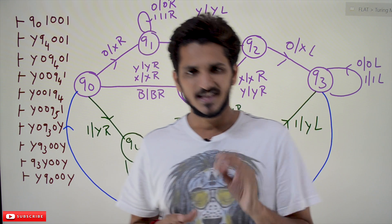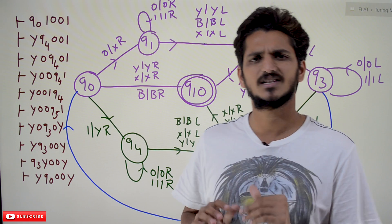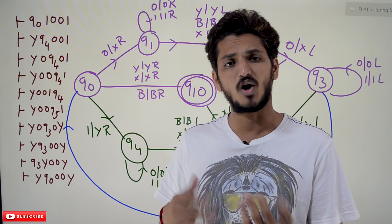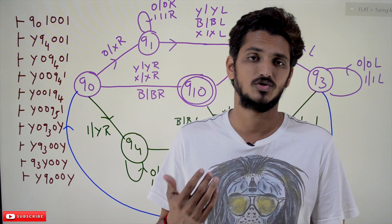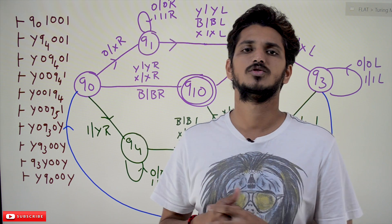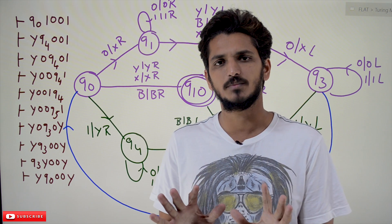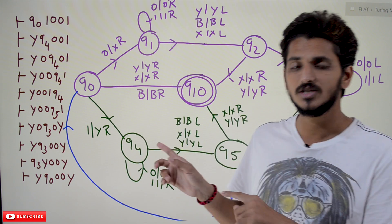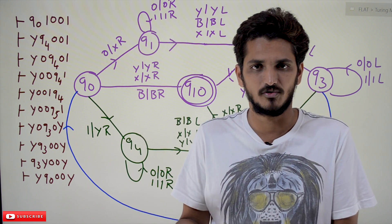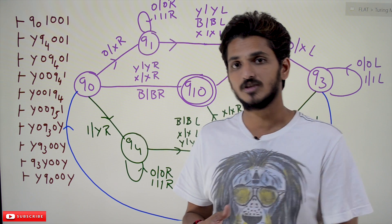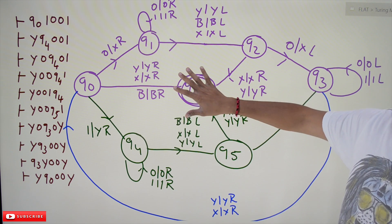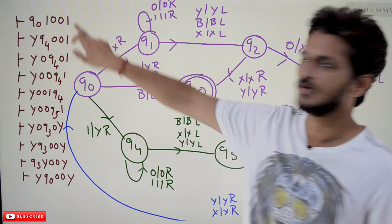Instantaneous description is nothing new. We already discussed how to accept or reject a given string for a Turing machine. The same concept, but instantaneous description is used from an exam point of view. If someone asks you whether this Turing machine is going to accept the given string 1001 or not, how do you show that in an exam?